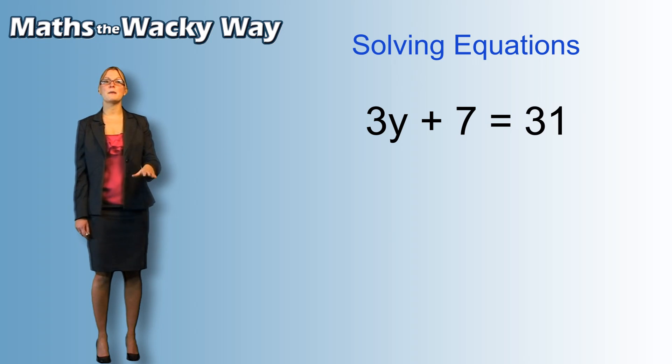So we care about y. We want y to become on his own so we're going to move everything else away from y and we're going to treat the 3 as another character, the 7 as another character and the 31 as another character.